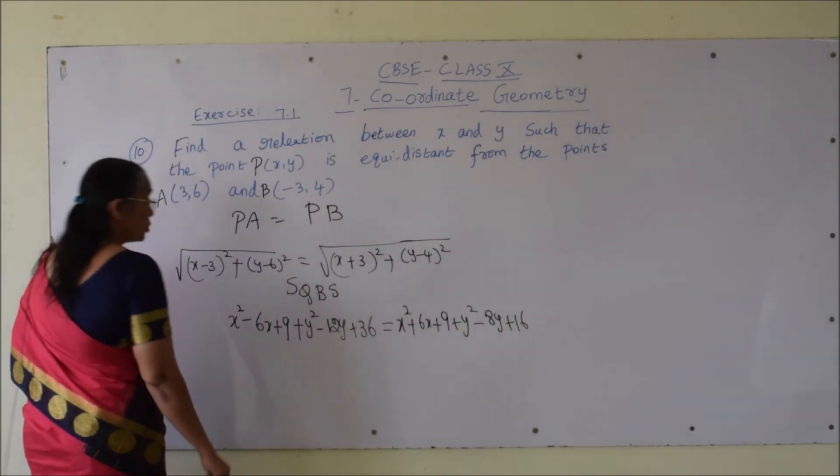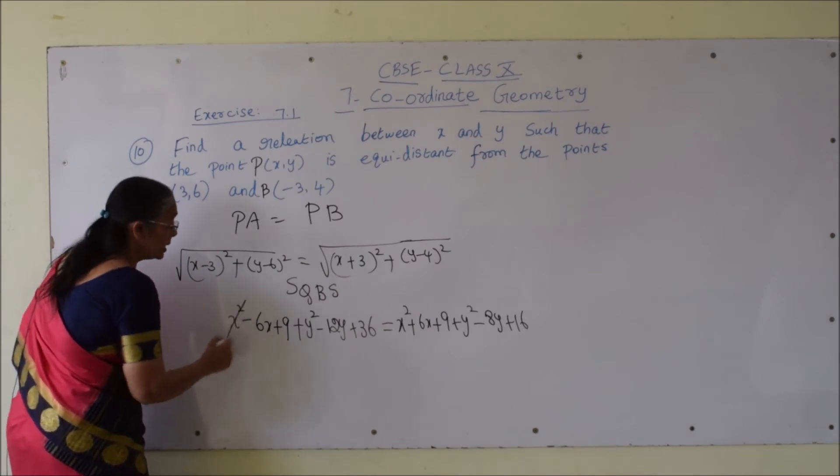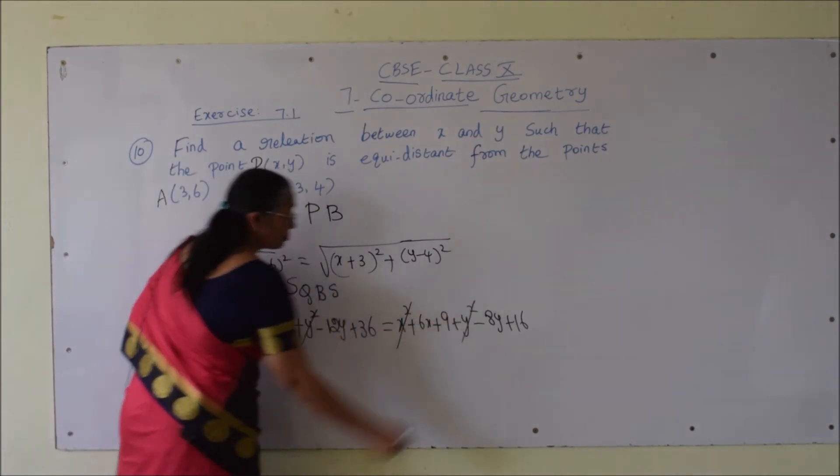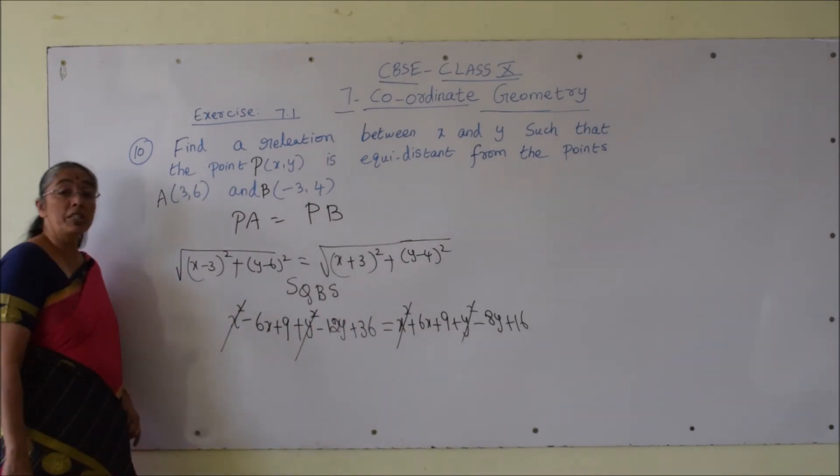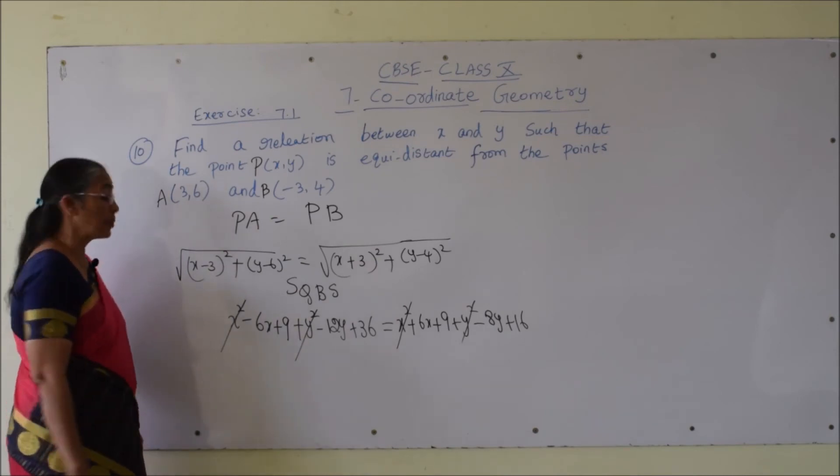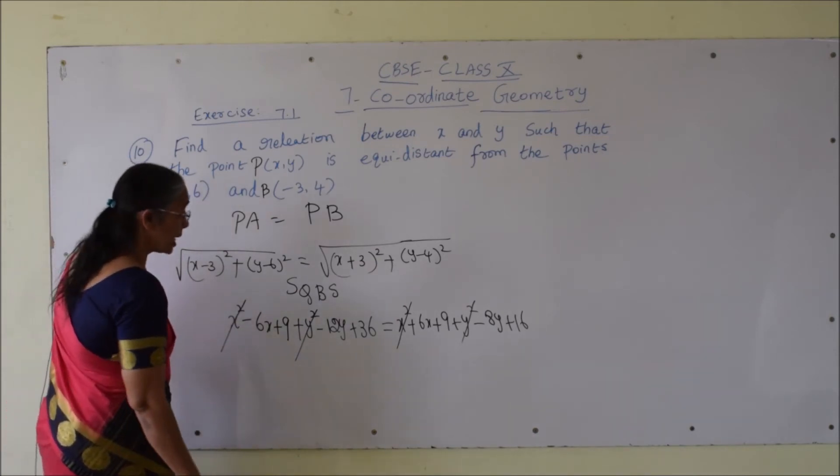So which terms will get cancelled? Second degree terms cancelling: x square, x square, y square, y square. Similar terms are there on both left hand side and right hand side we can cancel. That is when we are bringing to one side it will become negative, so it is getting cancelled.